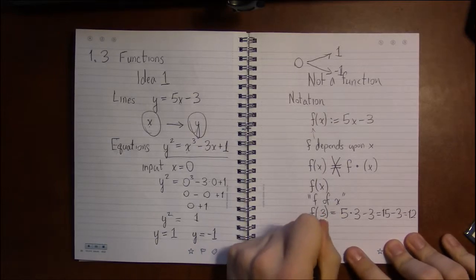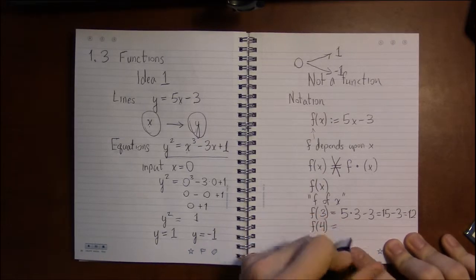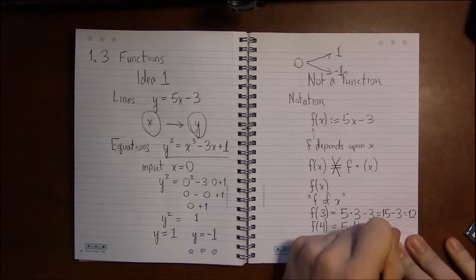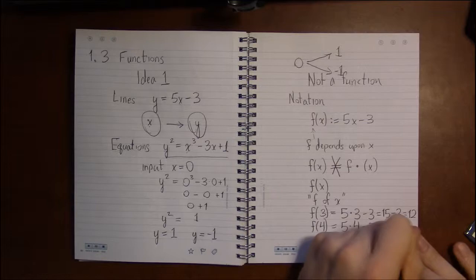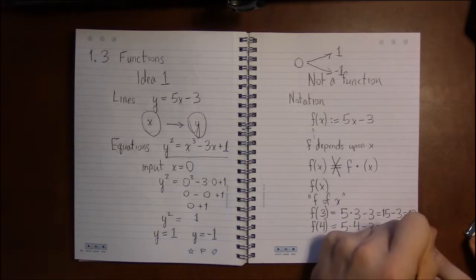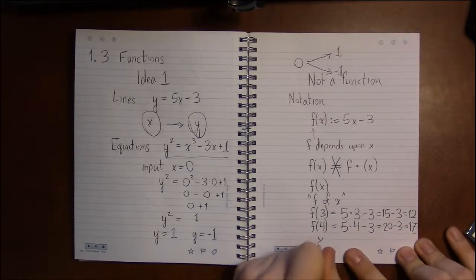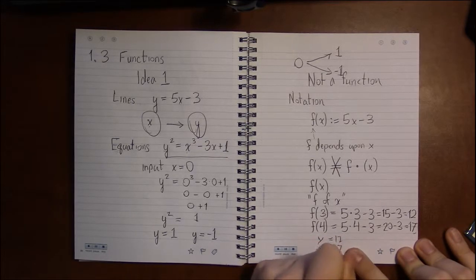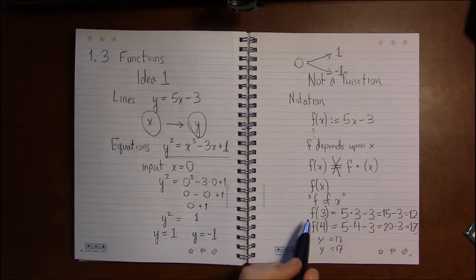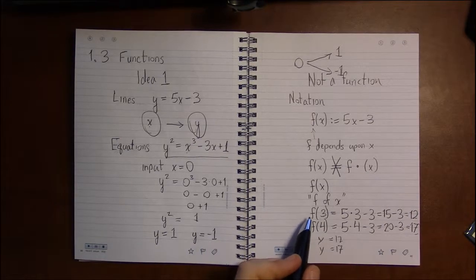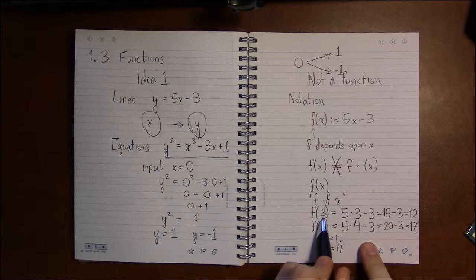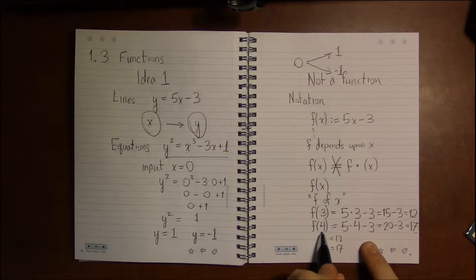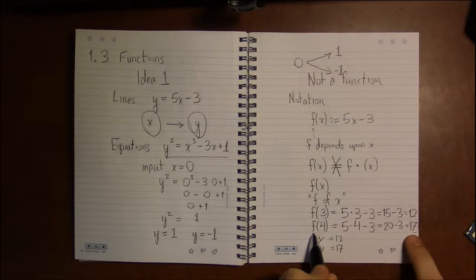But then I can also say f of four—five times four minus three, that's twenty minus three or seventeen. So I'm not saying y equals twelve and y equals seventeen. I'm really emphasizing this dependence upon when x is three, this is the value of f. When x is four, this is the new value of f.